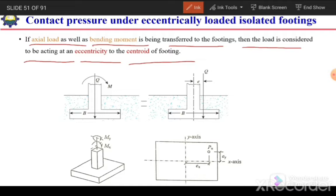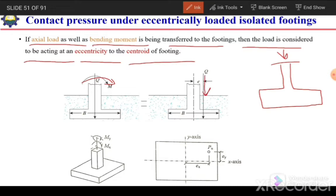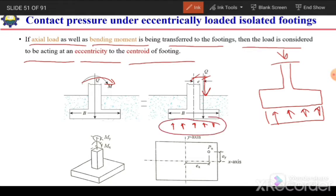Previously we have studied that only axial load is being transferred from the column to the foundation or footing, but if the bending moment along with the axial load exists, then it can be considered that the axial load is acting at some eccentricity from the centroid of the column or centroid of the footing. In that case the pressure under this footing will not be uniform, as we considered in case of axial loaded footing without the bending moment.